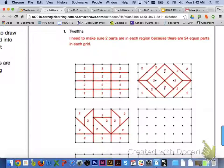And finally for letter F, with twelfths, you need to make sure that you have two parts in each region because there are 24 equal parts in each grid.